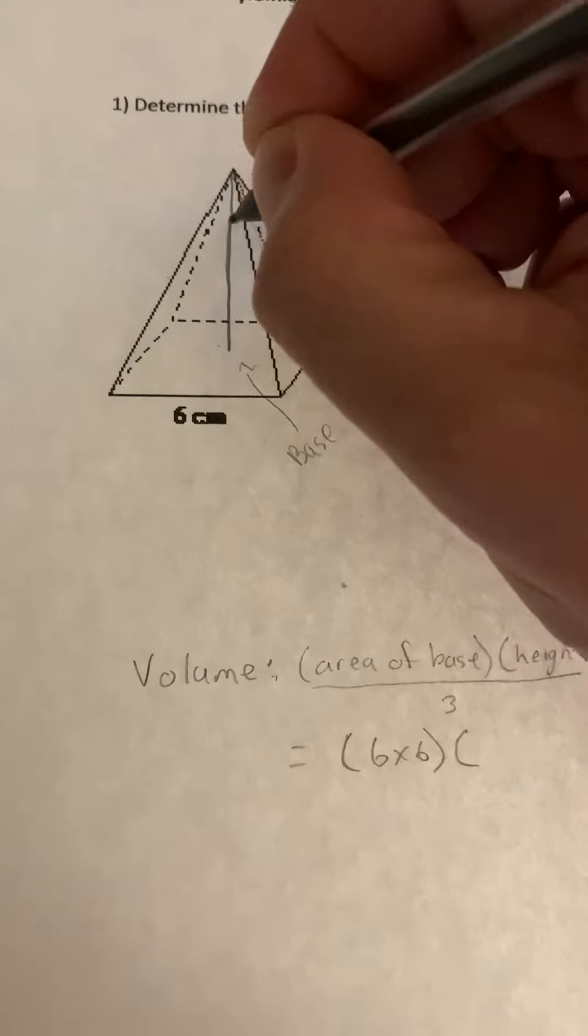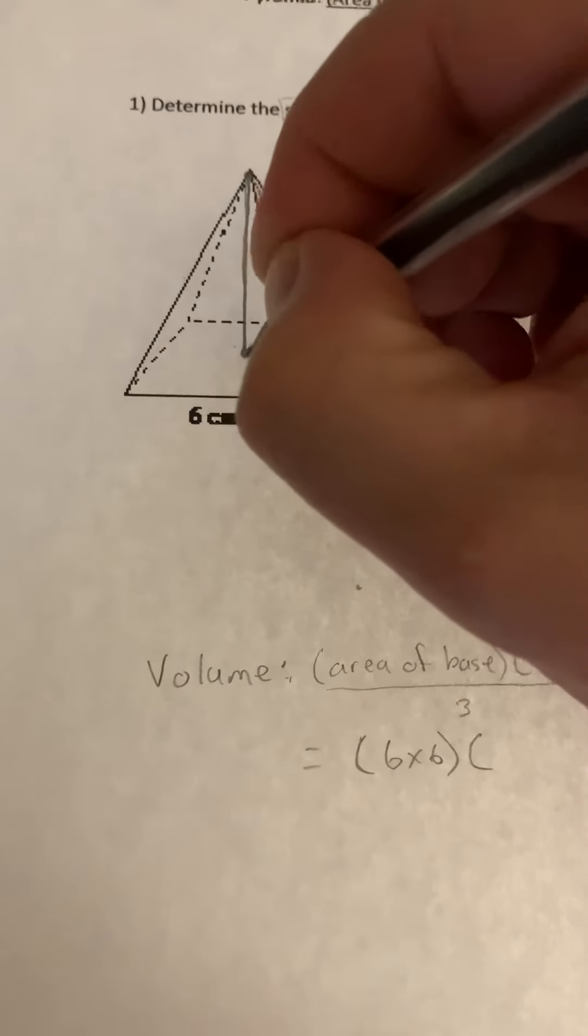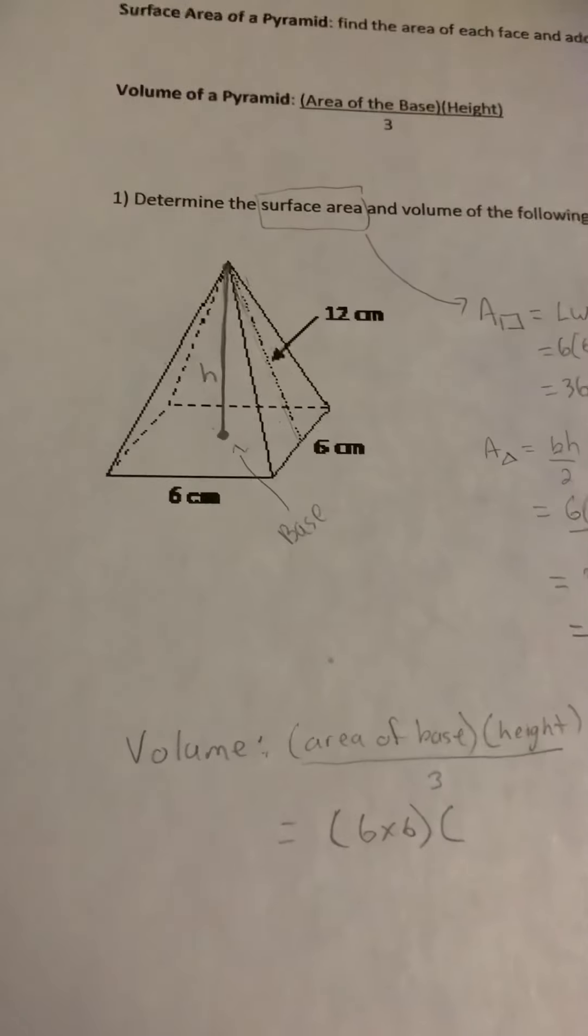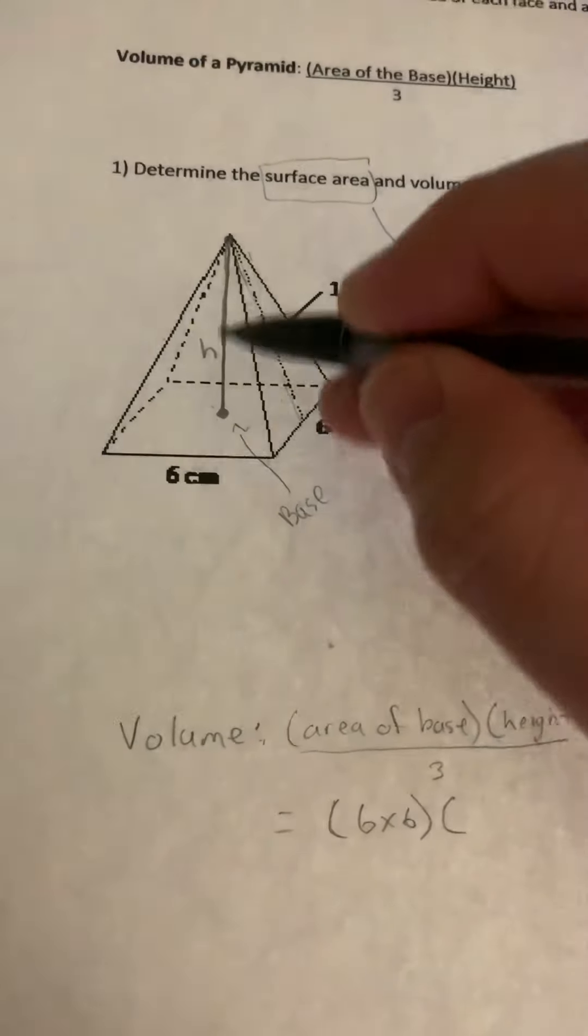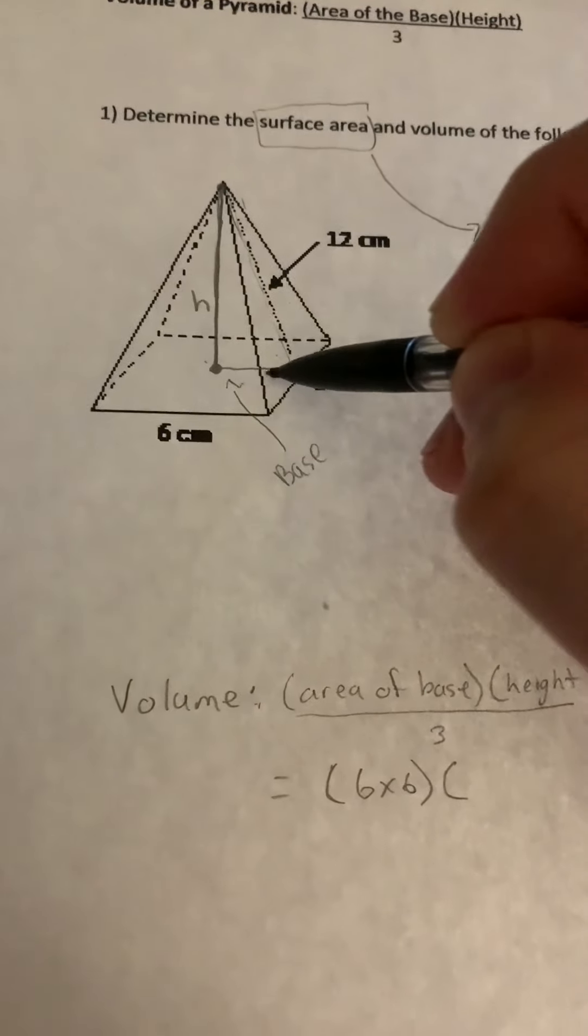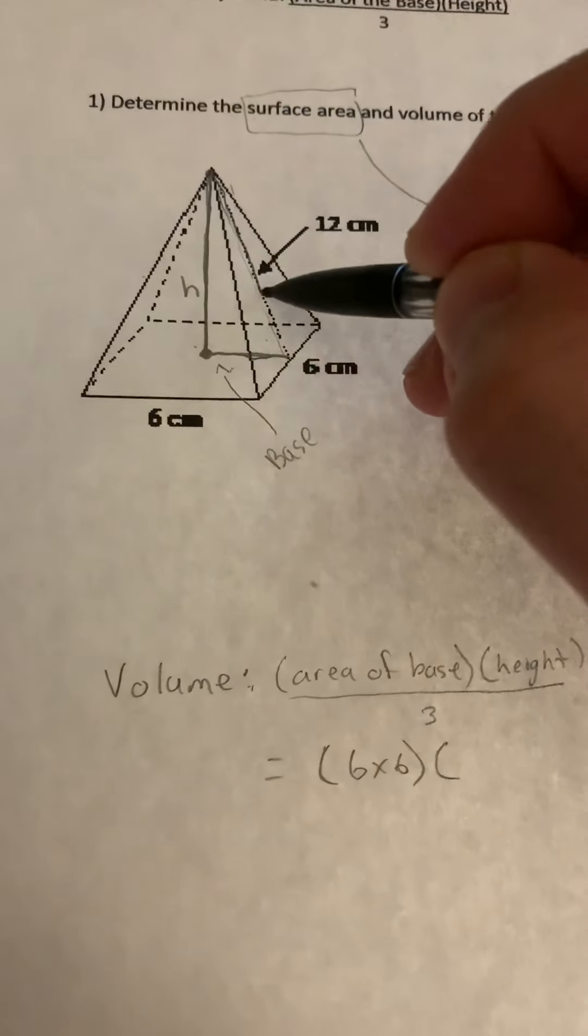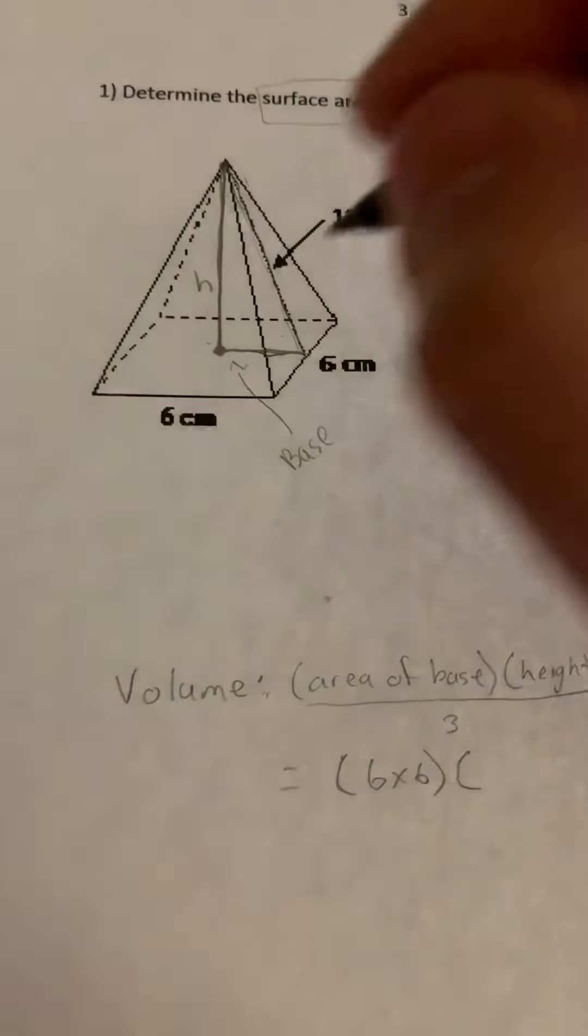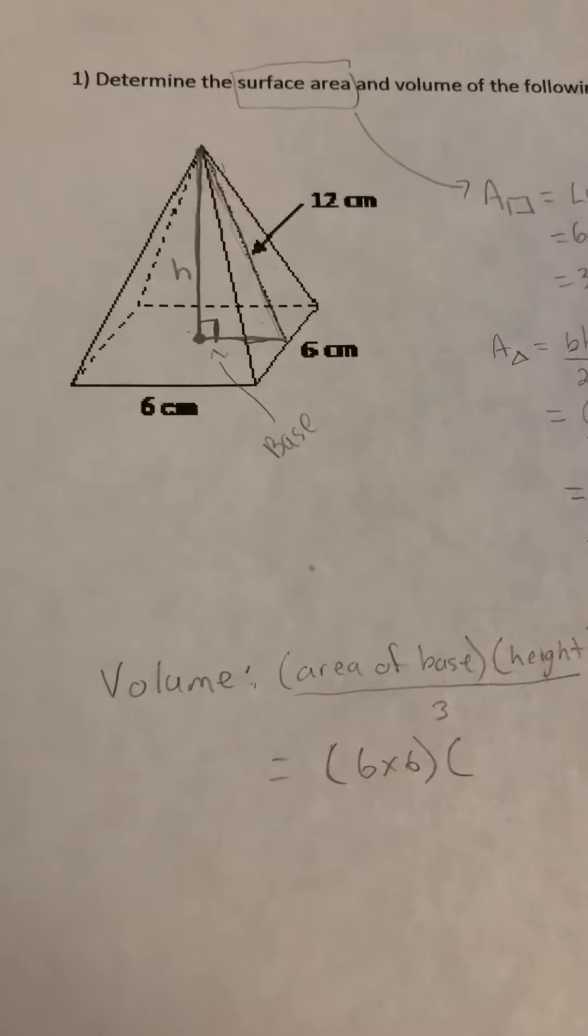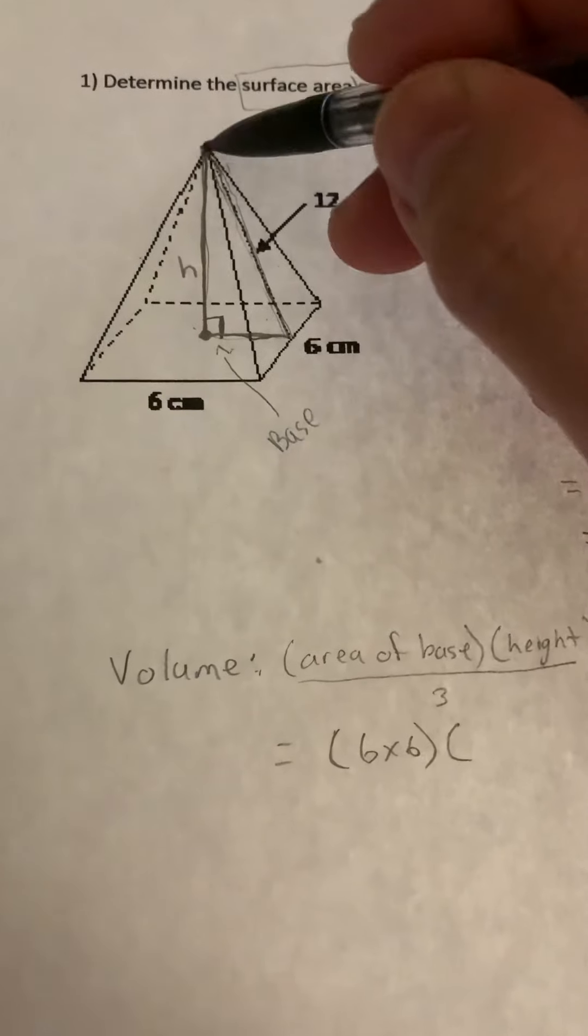The height of the pyramid goes from the tip to the middle here. This is the height. So we need to find the height of this. So what we do is we find this line here. So we create a right triangle within the pyramid. The reason why we create a right triangle is so that we can use Pythagorean theorem to find the height.